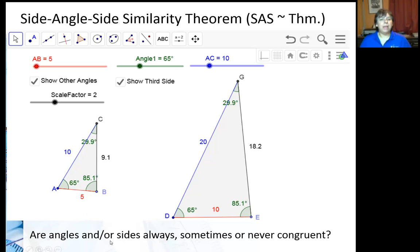So the question to you is, if I have two triangles similar by side-angle-side, are the angles and/or sides always, sometimes, or never congruent? Well, hopefully you can see which ones are congruent and which ones aren't necessarily congruent.